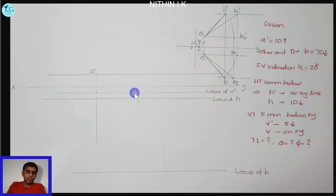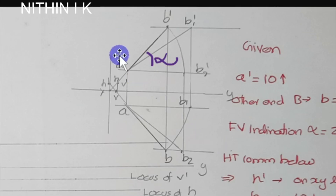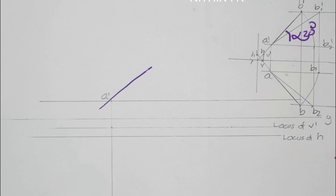We have alpha: A-dash and B-dash is equal to alpha equal to 20 degrees. This line A-dash B-dash makes an angle of 20 degrees. Extending this line gives us V-dash — the vertical trace — and H-dash on the XY line.